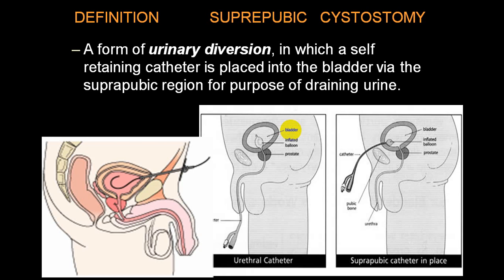Another procedure involves placing a catheter into the bladder from the suprapubic region, called suprapubic cystostomy. This is for urinary diversion from the bladder when you cannot approach through the urethra. So we can call it either urethral catheterization or suprapubic catheterization.